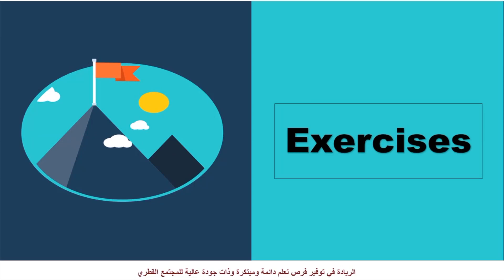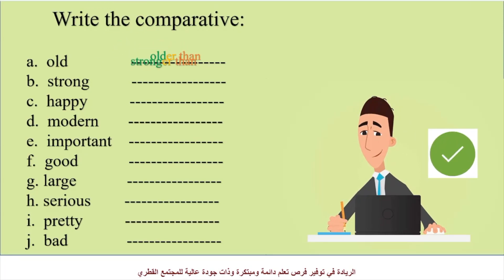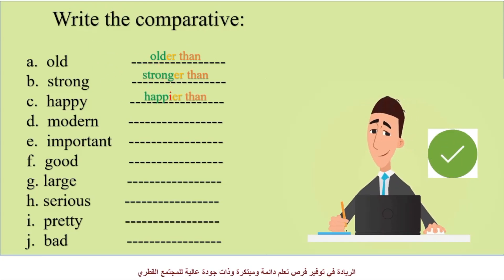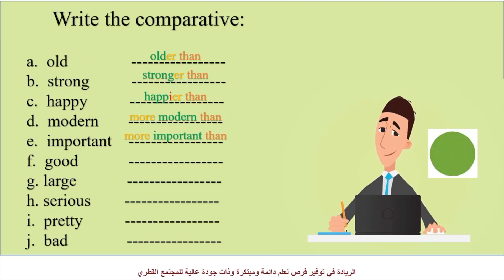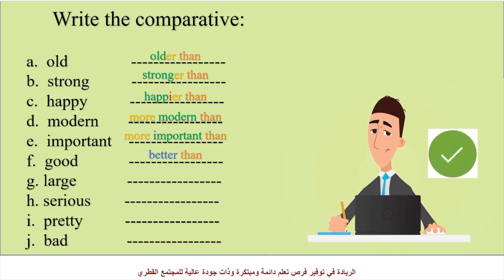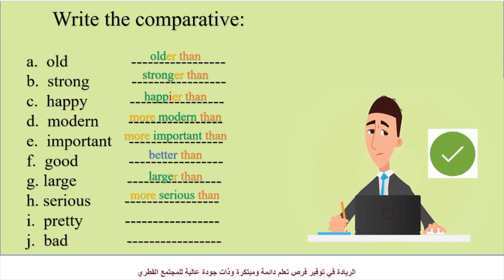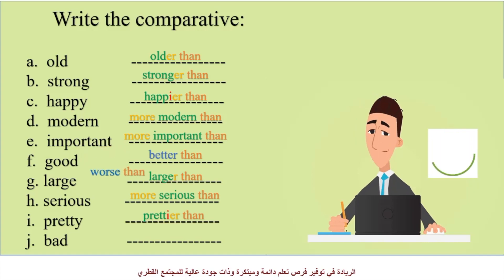Now let's do some exercises. Old is a one-syllable adjective, we add ER to it. Strong is a one-syllable adjective. Happy ends with Y, we change it to I. Modern is a two-syllable adjective. Important is a three-syllable adjective. Good is an irregular adjective. Large ends with E, so we add R only. Serious is a two-syllable adjective. Pretty ends with Y, so we change Y to I.